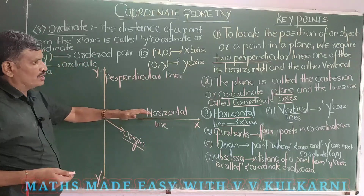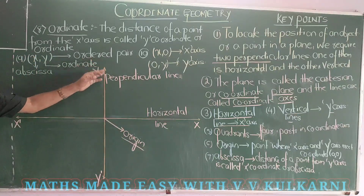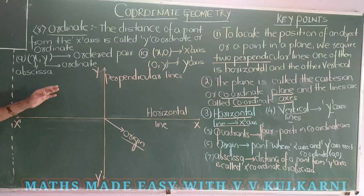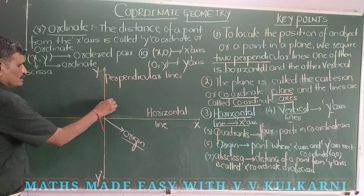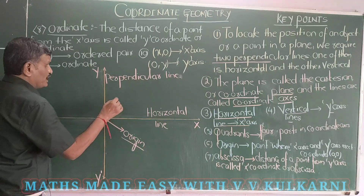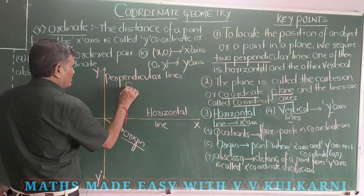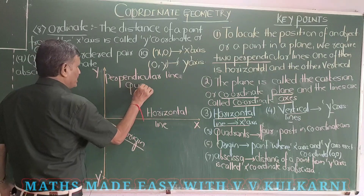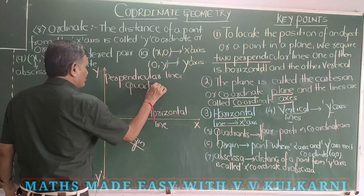Horizontal line — X-axis. Vertical line — Y-axis. The perpendicular lines are required to locate a point on the graph, and we call that plane the coordinate plane. Now you can see that in a plane there are four parts. Each part is called a quadrant.